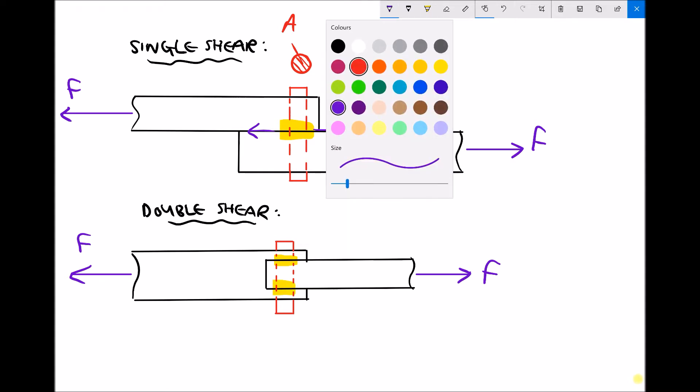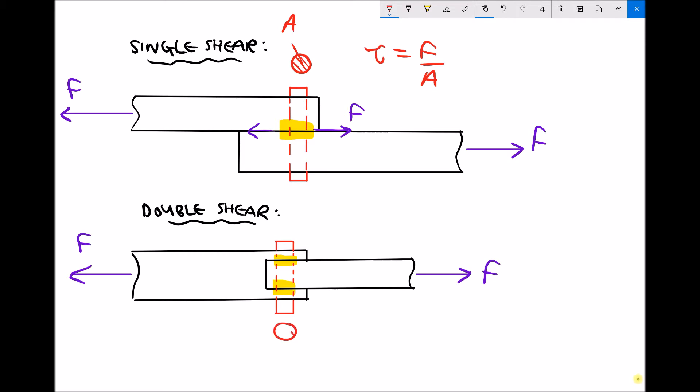We still have a circular pin and that circular pin still has a cross sectional area A, but this time the area that is resisting the shear force is doubled.